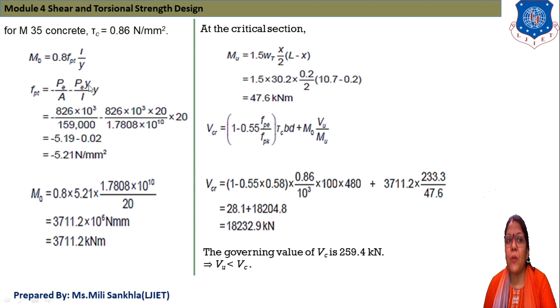The vertical component of prestressing steel is Pe·sin θ. Pe is given 826 and sin θ that is sin 6° is 0.104 and we get Vp 86. Now Vco + Vp equals 173.4 + 86 total is 259. Vcr equals (1 - 0.55fpe/fpk)τc·bd + M₀·Vu/Mu.